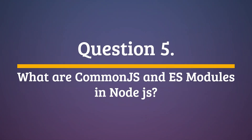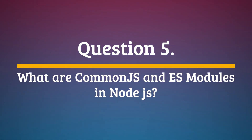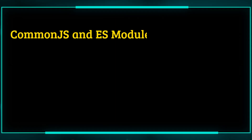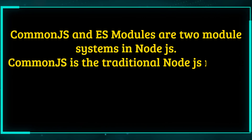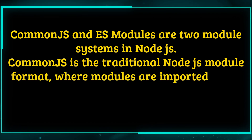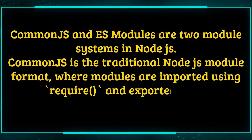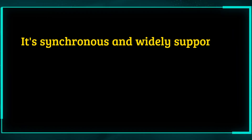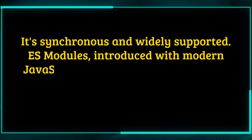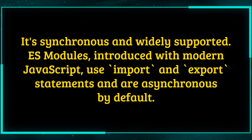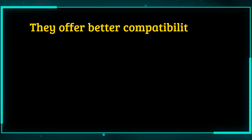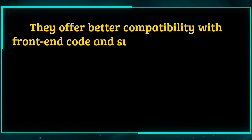Question 5. What are CommonJS and ES modules in Node.js? Answer. CommonJS and ES modules are two module systems in Node.js. CommonJS is the traditional Node.js module format, where modules are imported using require and exported using module.exports. It's synchronous and widely supported. ES modules, introduced with modern JavaScript, use import and export statements and are asynchronous by default. They offer better compatibility with front-end code and support static analysis and tree shaking.